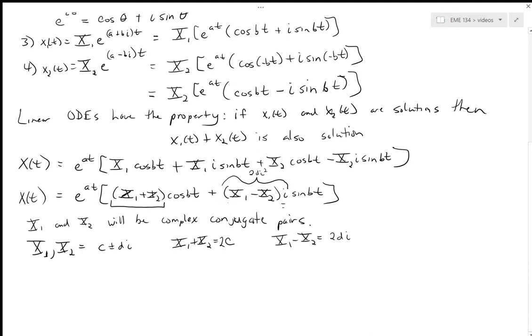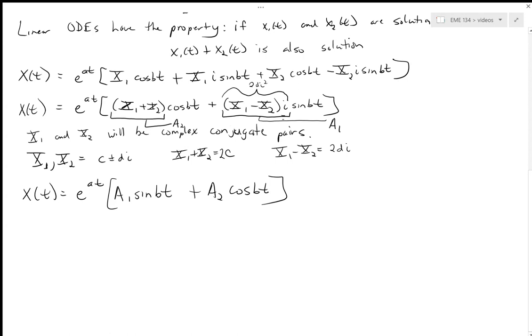So what this allows us to do is that for each of these coefficients we can rewrite those as a real-valued number. I'm going to pick A1 to be (X1 - X2)*i and A2 to be X1 + X2, a real value. So X(t) then becomes e^(at) times [A1*sin(bt) + A2*cos(bt)].